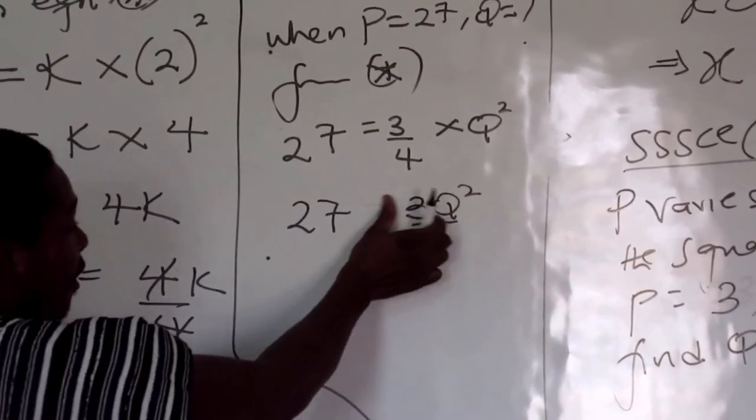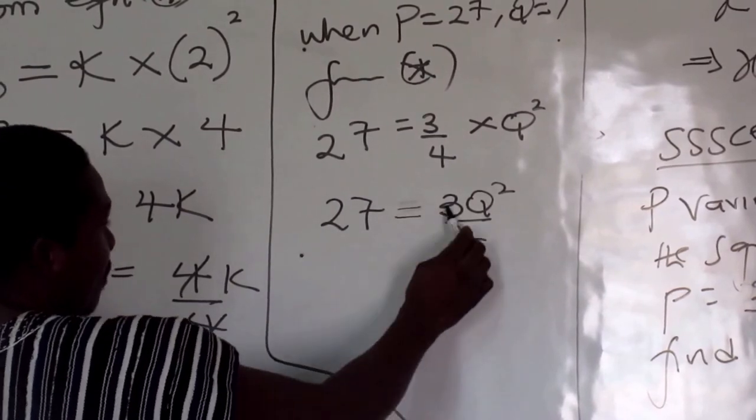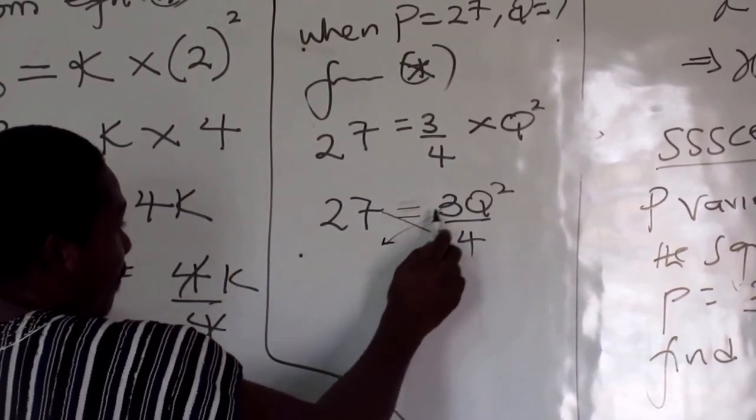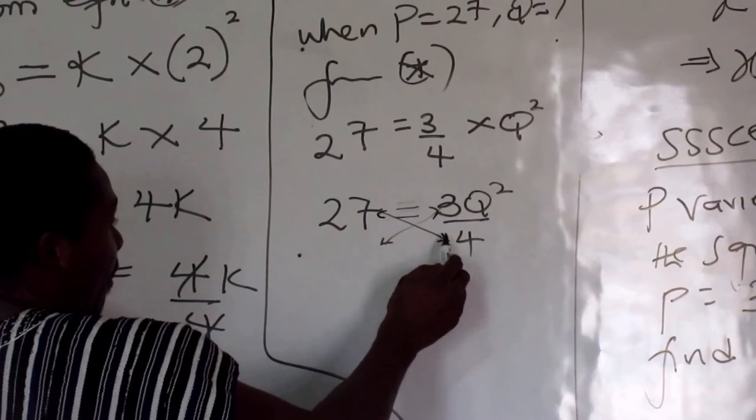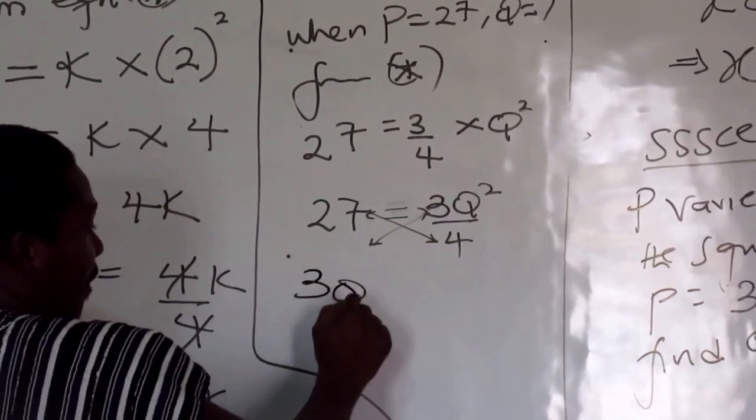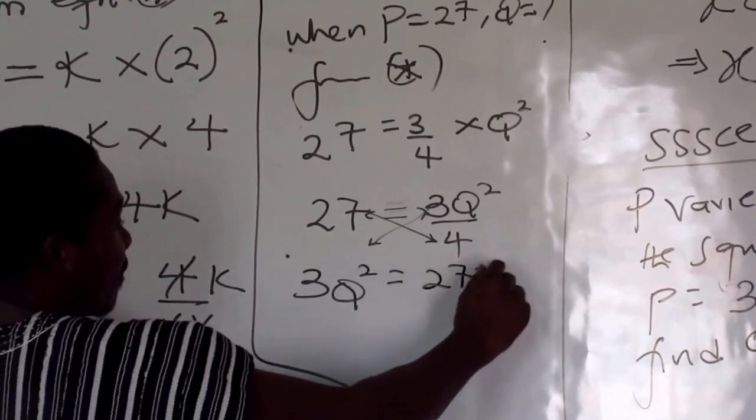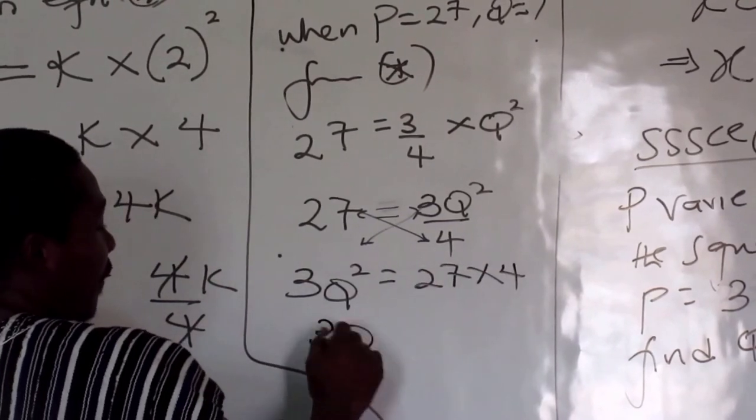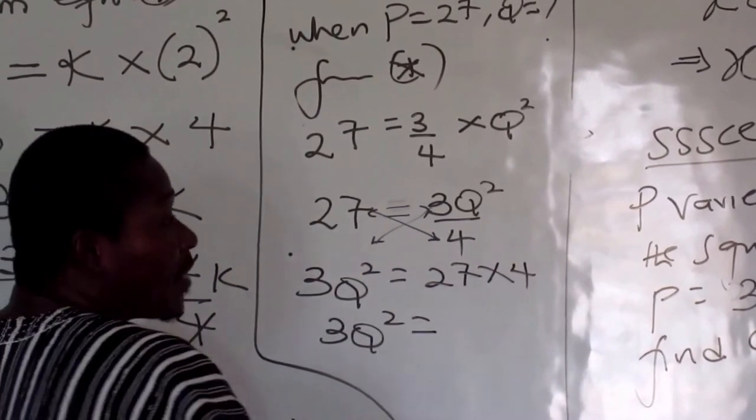From star, once again, we have 27 equals three-fourths with a Q that we don't know. Good. Now when you look at this, so that is 27 equals 3Q squared over 4. So when you have equal to sign between fractions, you can also do cross multiply, right? You have something called cross multiply.